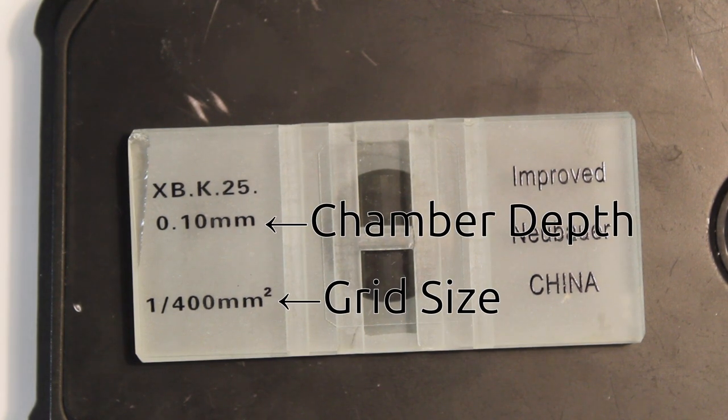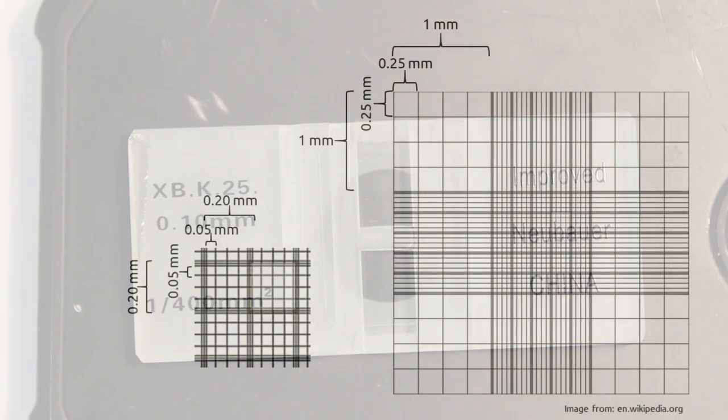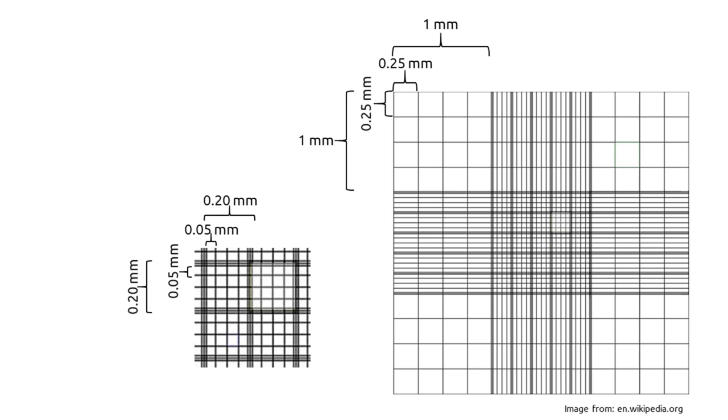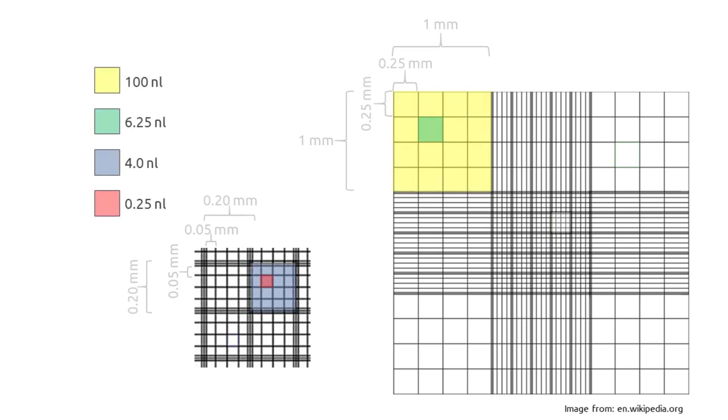Most hemocytometers use a standardized grid with a standardized height but always check the instructions that came with your hemocytometer to make sure that you're using the right calculations. The vast majority of hemocytometers have a one millimeter by one millimeter major grid region which is 0.1 millimeters deep. This means that 100 nanoliters of liquid will fill the area over the one millimeter by one millimeter grid region.